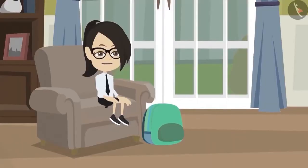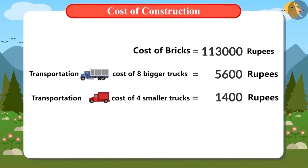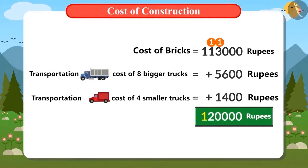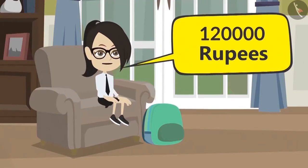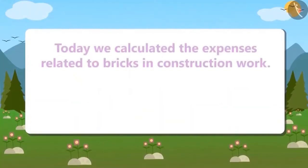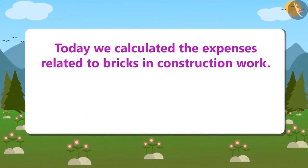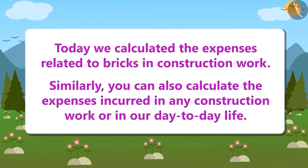Vandana has now calculated all the expenses related to bricks, including the cost of the bricks themselves and the transportation cost. Adding them all together gives a total of 1,20,000 rupees. This means it will cost 1,20,000 rupees just to purchase the required bricks to build the top floor. Today we calculated the expenses related to bricks in construction work; similarly, you can calculate expenses in any construction work or daily life.